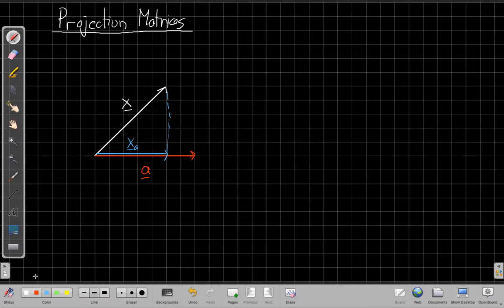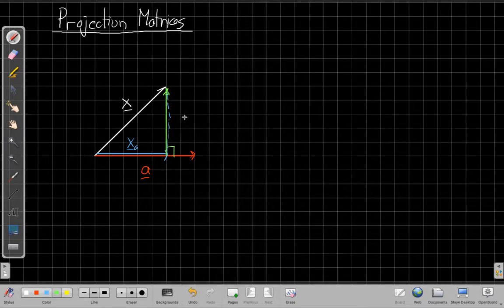The other piece is this one here, so I'll make a green line to show that. It is the orthogonal piece here, which is what's left, and it's perpendicular. This forms a right angle with a, and we would call this piece here x sub a perpendicular.